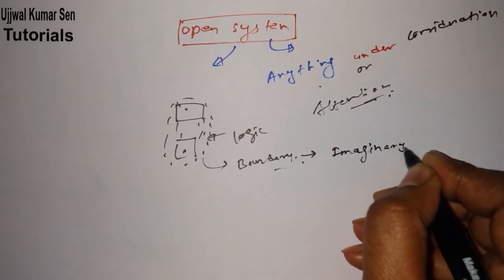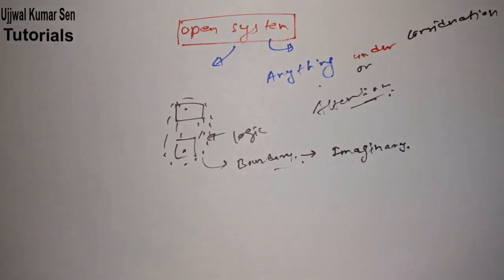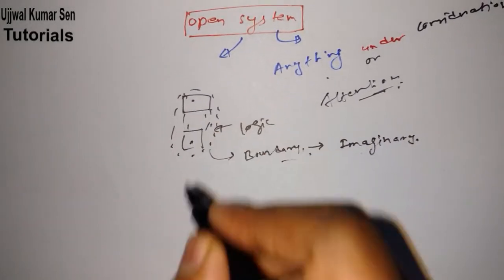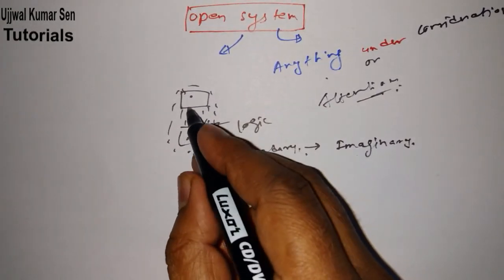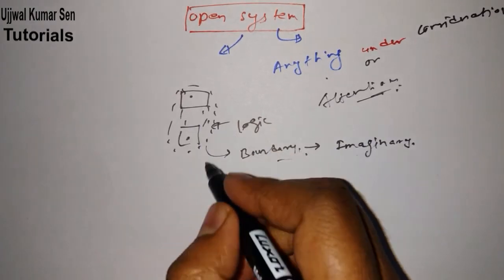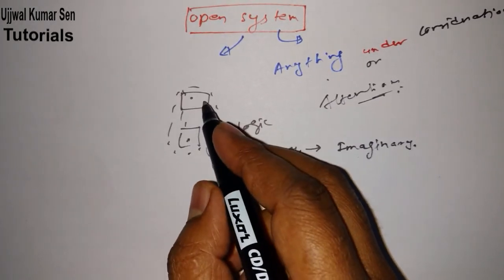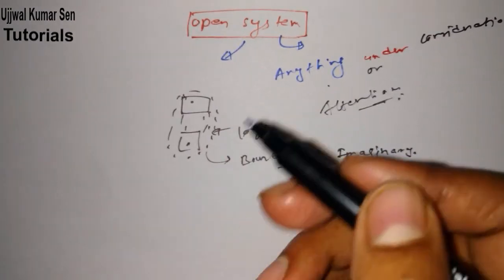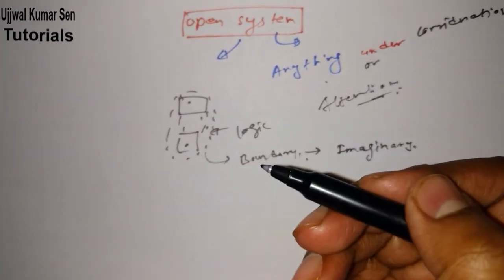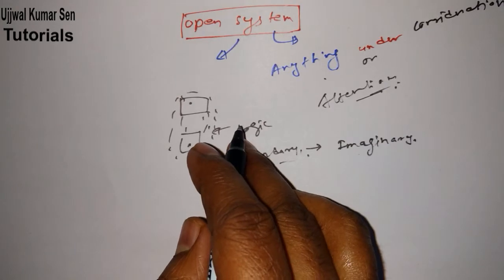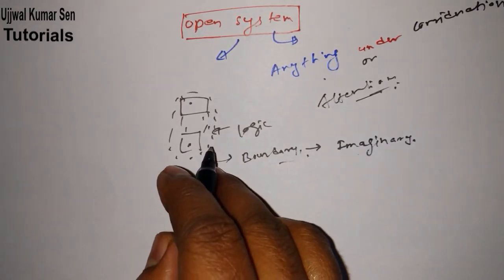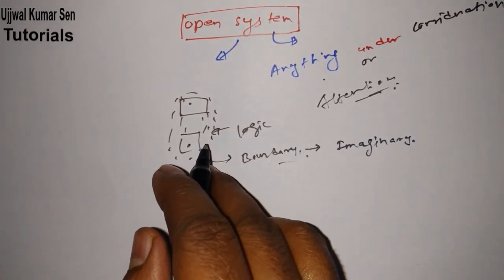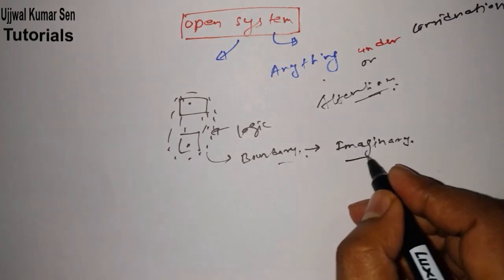Imaginary boundary is denoted by dotted line. Because you've been watching this tutorial, there's a system between you and the device, and other things just in front of you are the surrounding. What is separating you from those surrounding things? That is the boundary. What kind of boundary is this? Imaginary boundary.